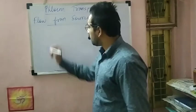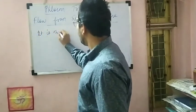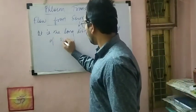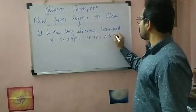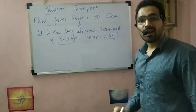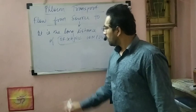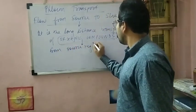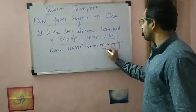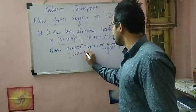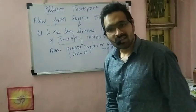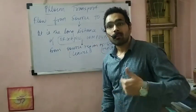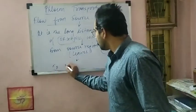So what does phloem transport indicate? It is the long distance transport of organic substances or organic compounds. In this topic we will see how long distance transport of organic compounds occurs through phloem. It is the long distance transport of organic compounds from the source region, also called the supply region, which is usually the leaves because photosynthesis produces organic compounds there.